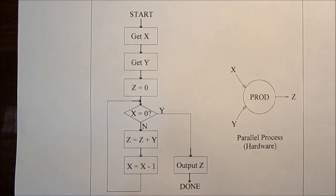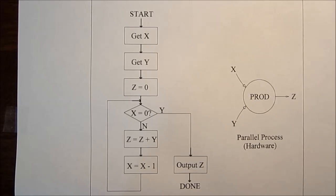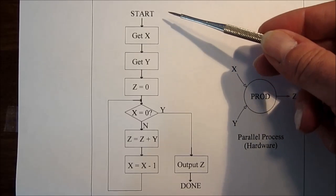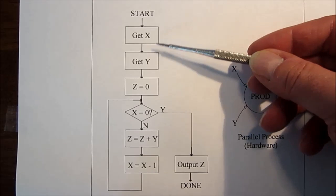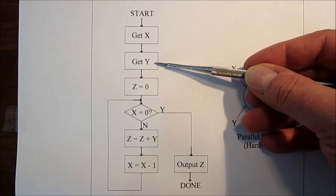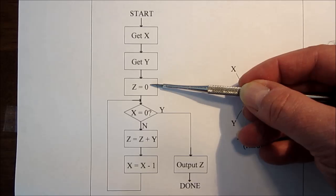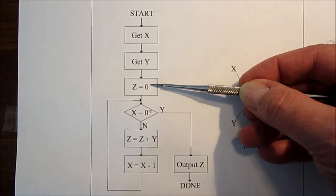For example, in this flowchart, we show the multiplication of two digits. We start here, and then we get the first digit, then we get the second digit, and we set our working register to zero.